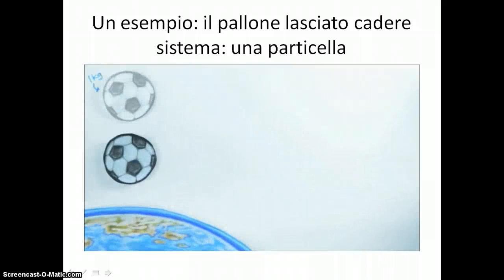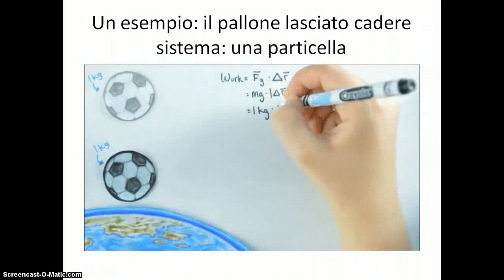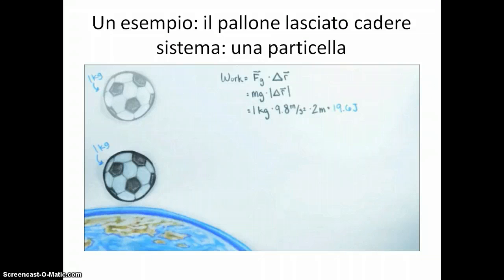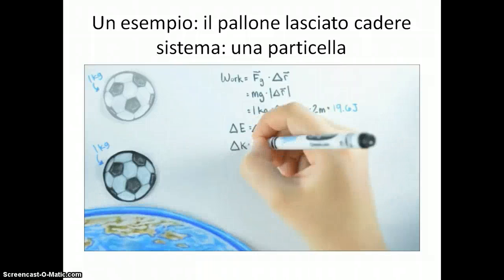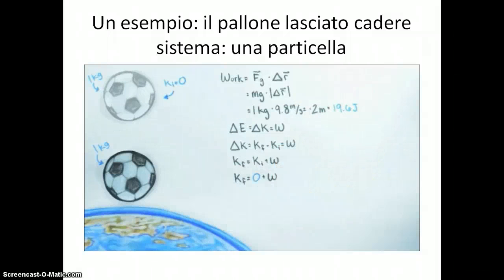Since the weight is a constant force, the work is just the scalar product of the weight and the displacement. So we find the work here, meaning the weight force transfers this amount of energy to the system. When we apply the energy principle, we know the change in system energy delta E is just equal to the change in kinetic energy. And since the ball starts at rest, we can solve for the final kinetic energy of the ball, which answers the question we posed.